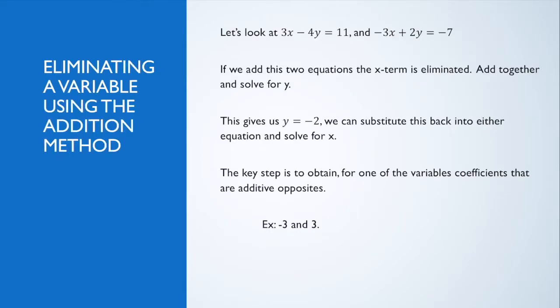The next method and the last method we're going to learn to solve a system of equations is using elimination, also sometimes called the addition method. Let's look at these two equations. I have 3x minus 4y is 11 and negative 3x plus 2y is negative 7. If I was to add these two equations together, my x term would be eliminated. Let's add these together and solve for y.